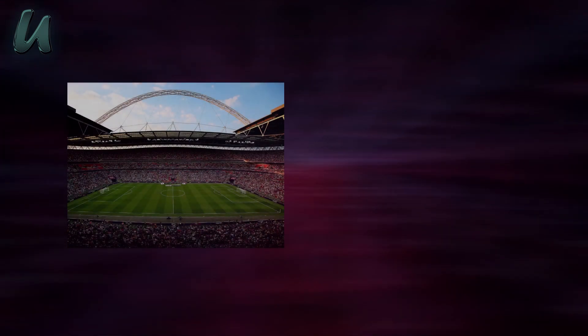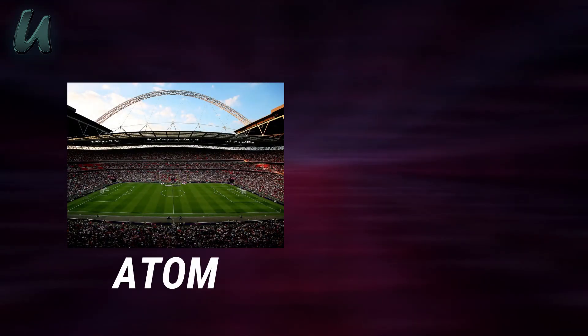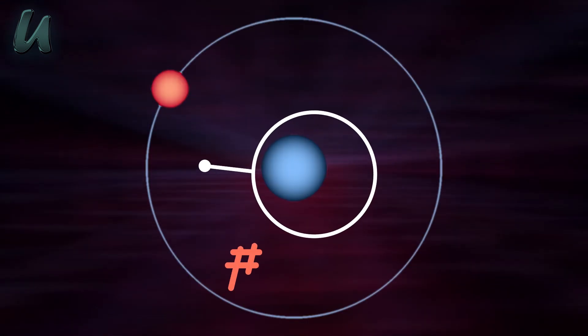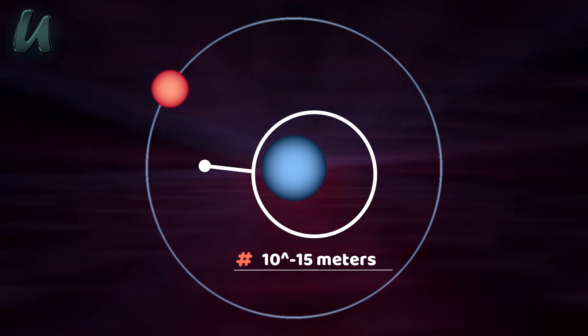If this is the size of an atom, then the nucleus will be this small. Well, to put it another way, if the atom was the size of a big sports stadium, then the nucleus would be the size of a grain of sand. This proton is 10 to the power minus 15 of a meter.